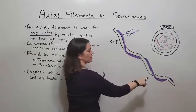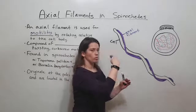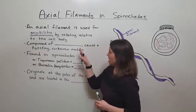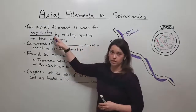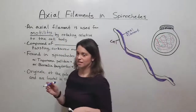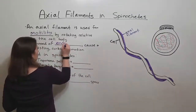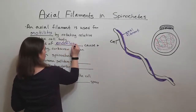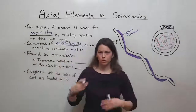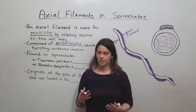The axial filament will rotate around the cell body, and that's what leads to movement. It is composed of structures known as endoflagella, and it causes a rotating, twisting, corkscrew type movement.